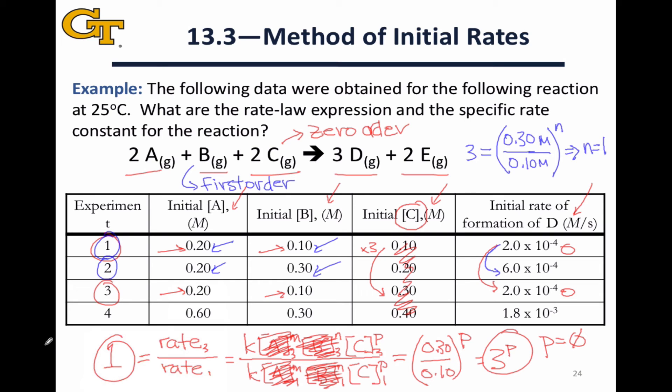All that's left now is to figure out the order with respect to reactant A. And what we should notice is that the only trials where A changes are experiments 3 and 4. So we're going to have to use those but the complicating factor here is that the concentration of B changes as well.